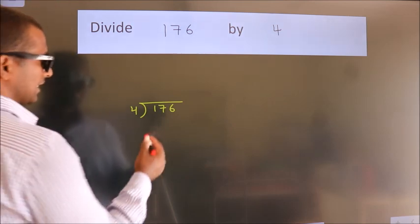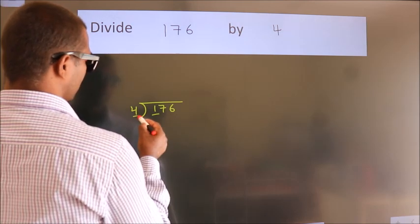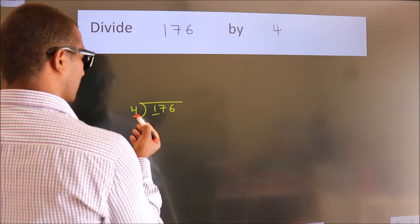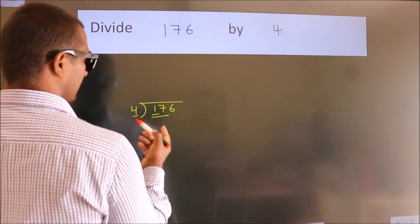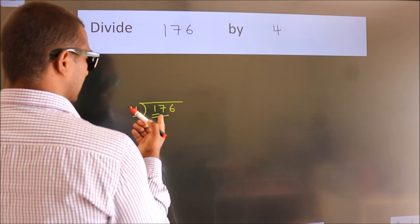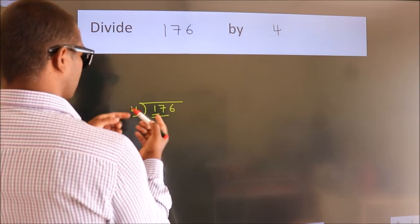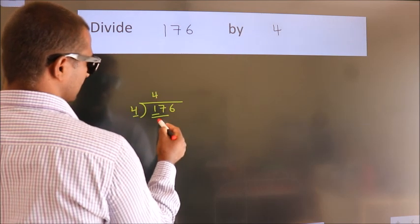Next. Here we have 1, here 4. 1 is smaller than 4, so we should take 2 numbers: 17. A number close to 17 in the 4 table is 4 fours equals 16.